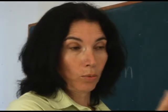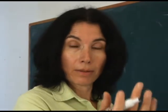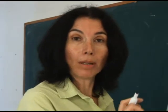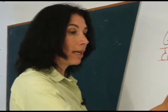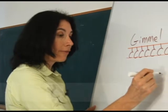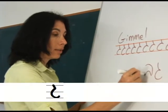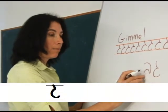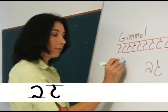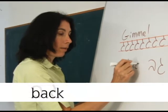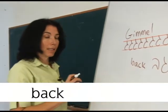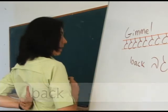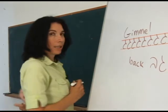Now that we know three letters already, we know two more words. For example, we know the word gav — gimel, bet — gav. Here is my gav.